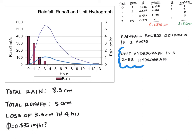That rainfall excess occurred in 2 hours, which means that this unit hydrograph is a 2-hour hydrograph. If we go back to that problem statement, we would call this a 2-hour unit hydrograph. And this becomes really important when we apply the unit hydrograph to different storms.